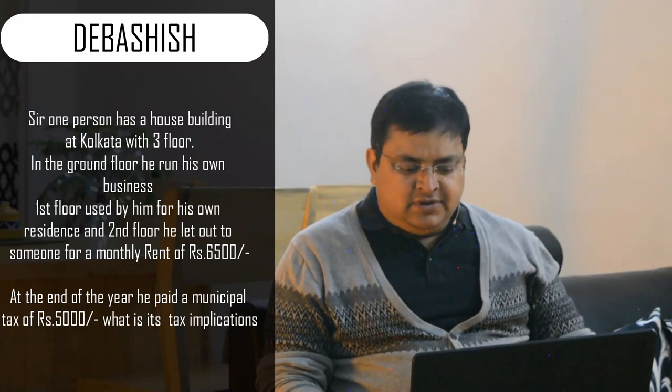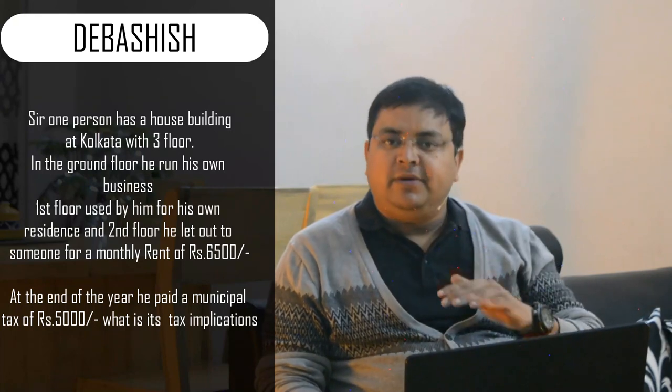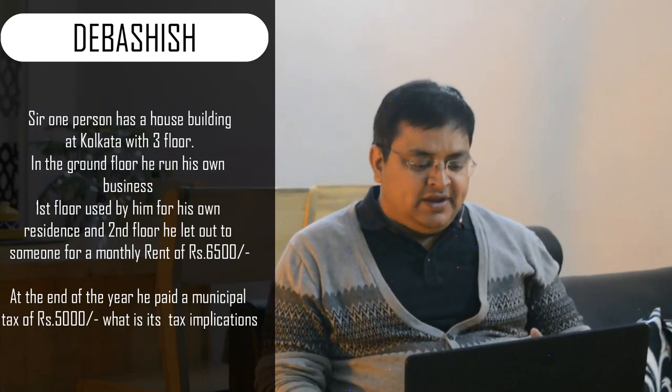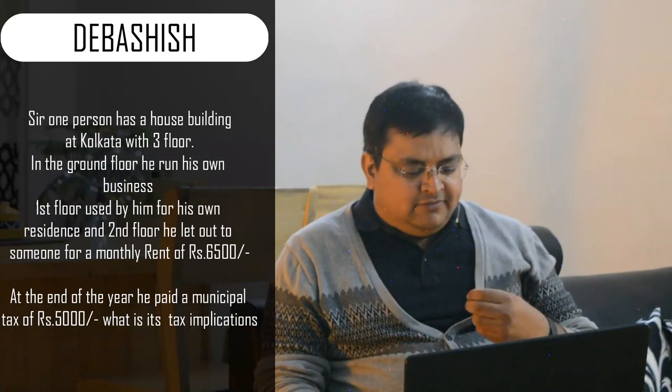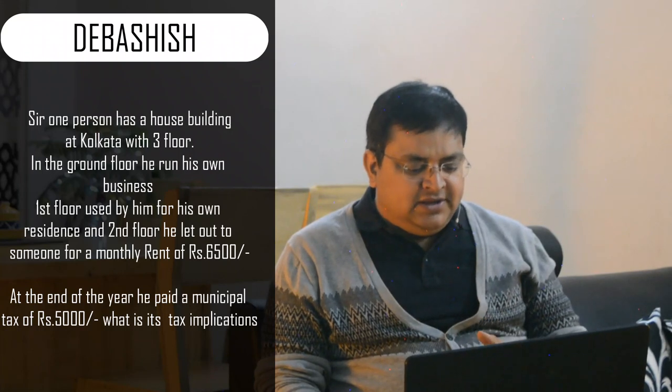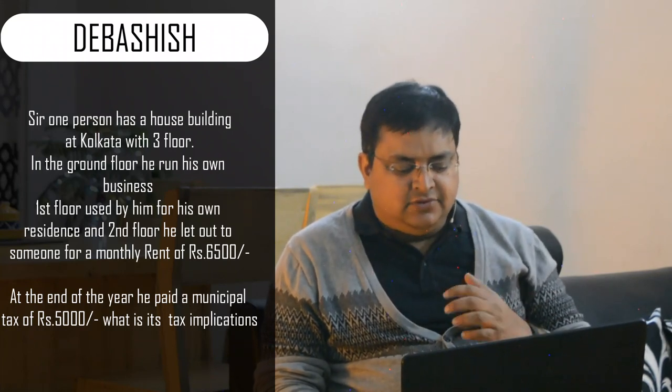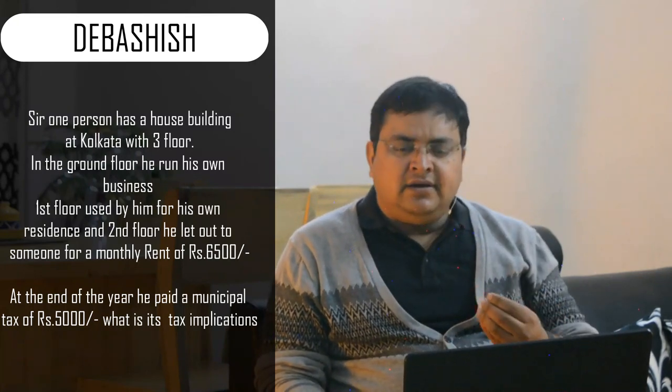Next question from Debashish: one person has a house building in Kolkata with three floors — ground floor used for own business, first floor used for own residence (self-occupied), and second floor let out for a monthly rent of ₹6,500. At the end of the year, he paid municipal tax of ₹5,000. What is the tax implication? Ek ghar hai teen alag-alag units hain. In house property, if there are multiple uses, you treat each unit separately. The question is about how the ₹5,000 municipal tax will be treated — divide by three: approximately ₹1,333 per floor.